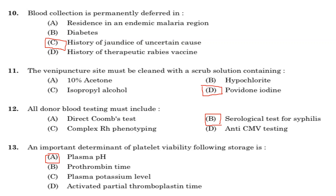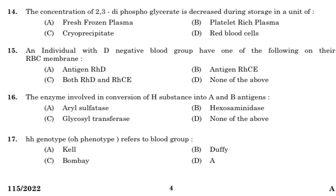Fourteenth question: the concentration of 2,3-diphosphoglycerate is decreased during storage in a unit of. Option A: fresh frozen plasma. Option B: platelet-rich plasma. Option C: cryoprecipitate. Option D: red blood cells. Answer is Option D, red blood cells. During storage, red blood cells rapidly use 2,3-diphosphoglycerate, so it decreases in stored blood.